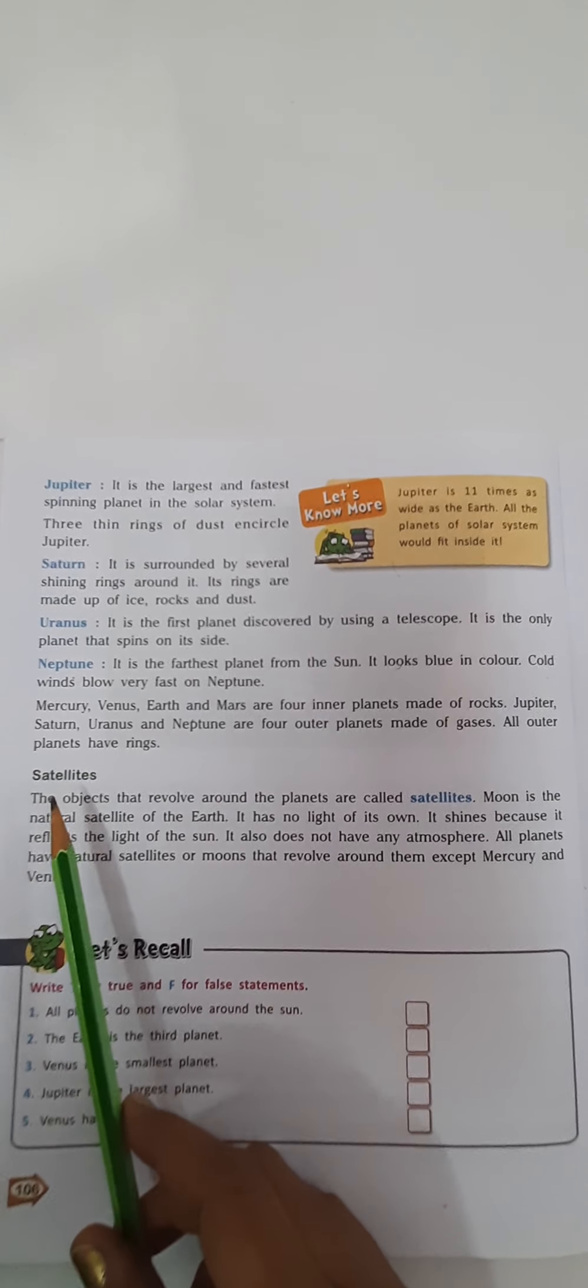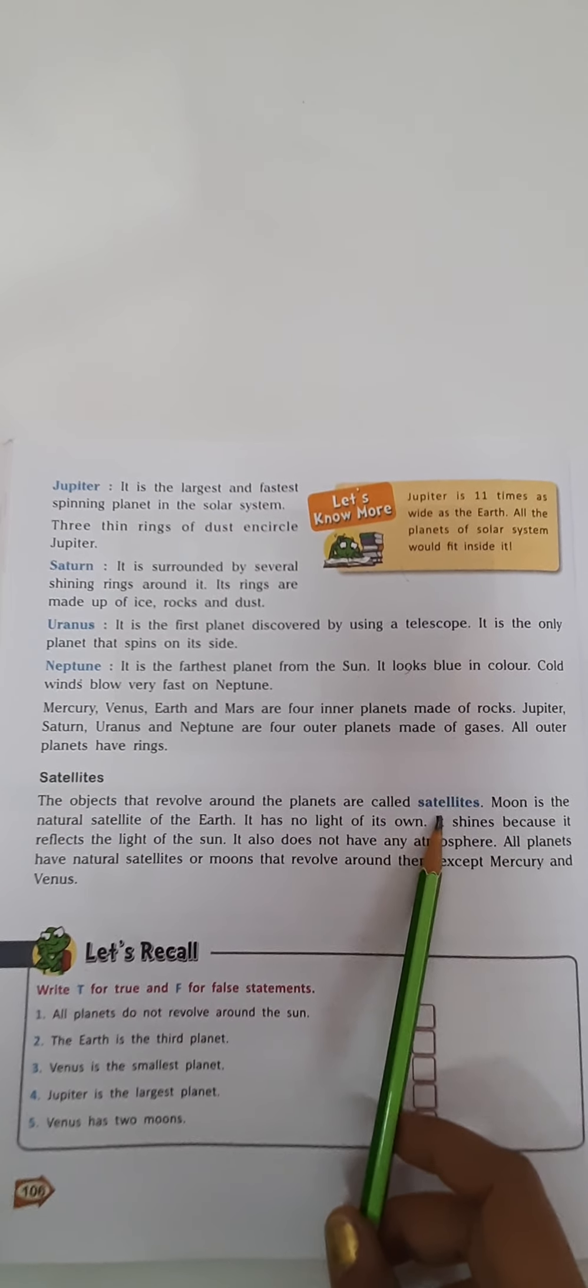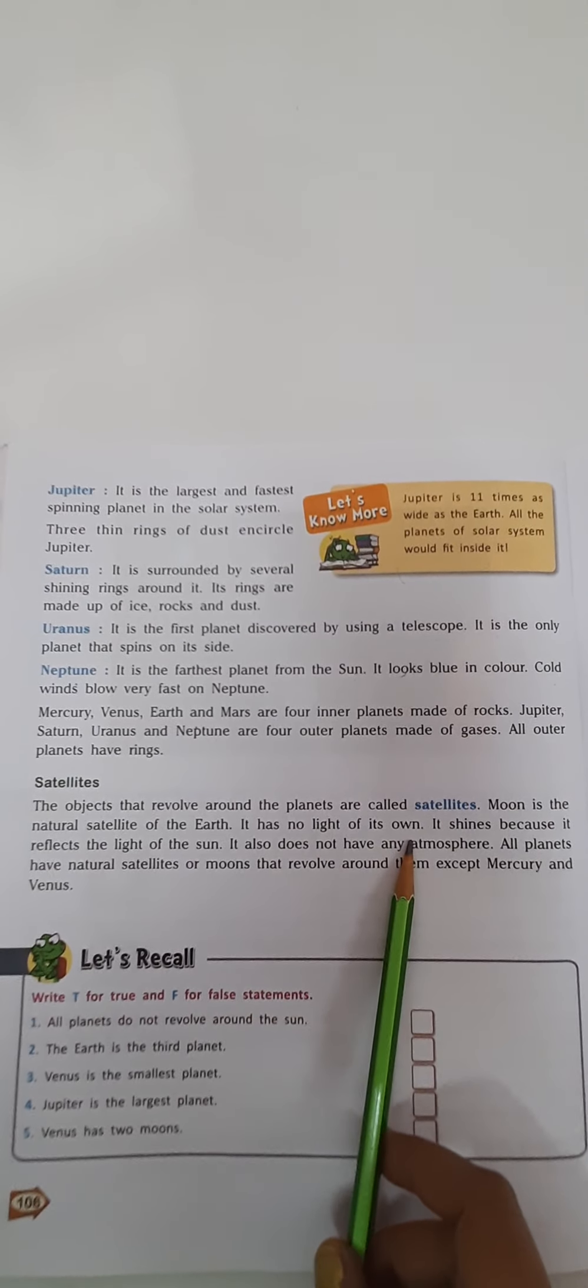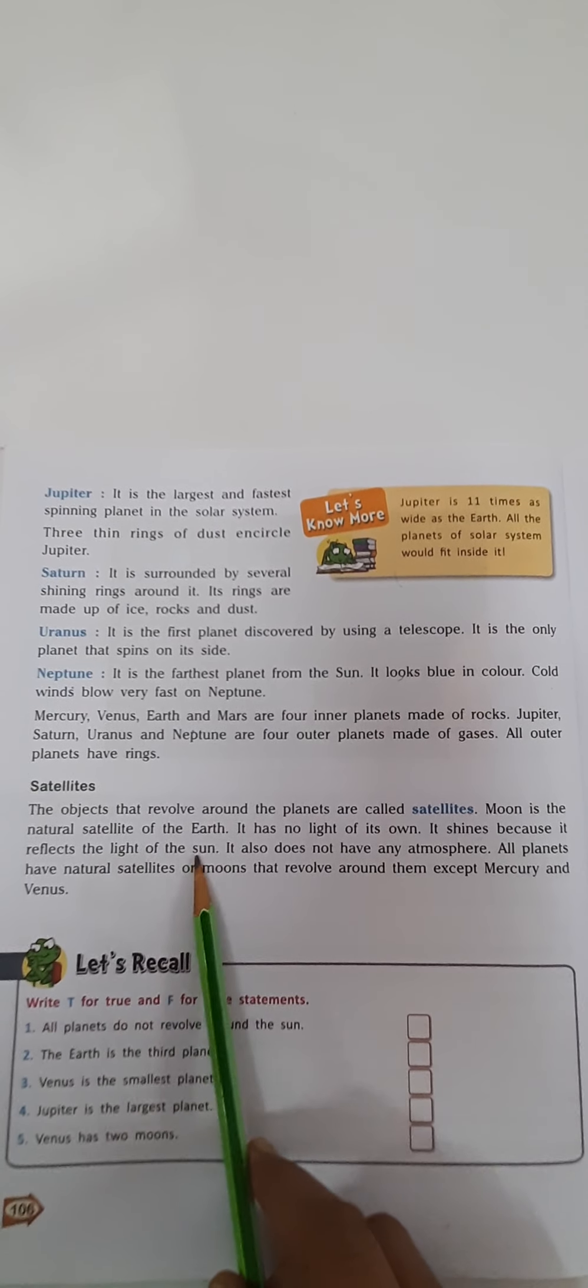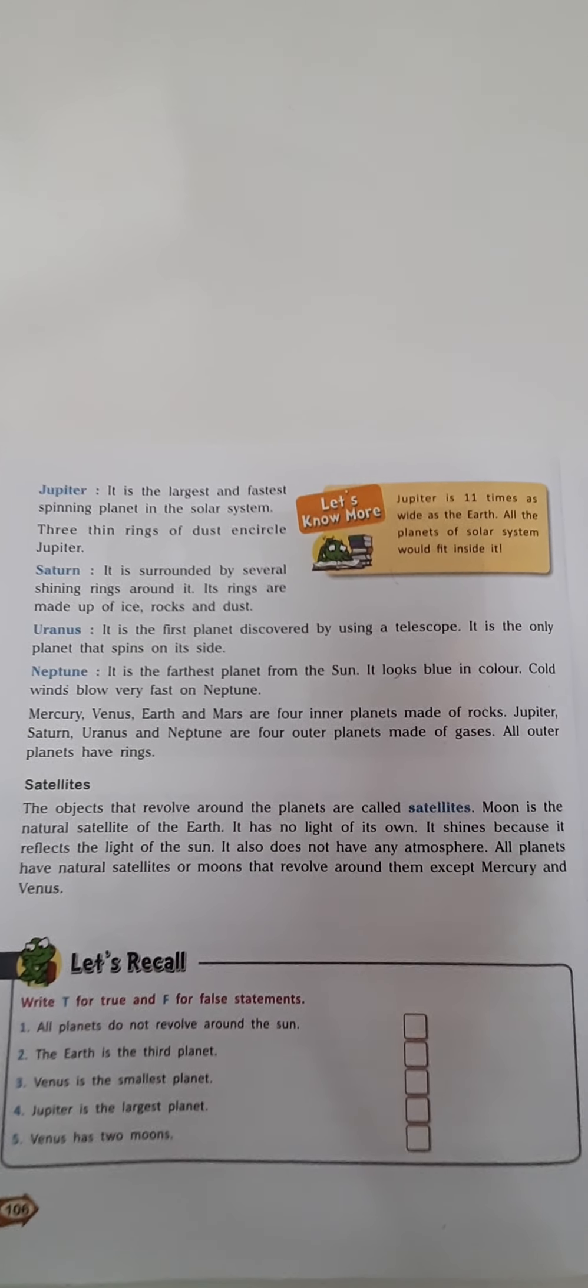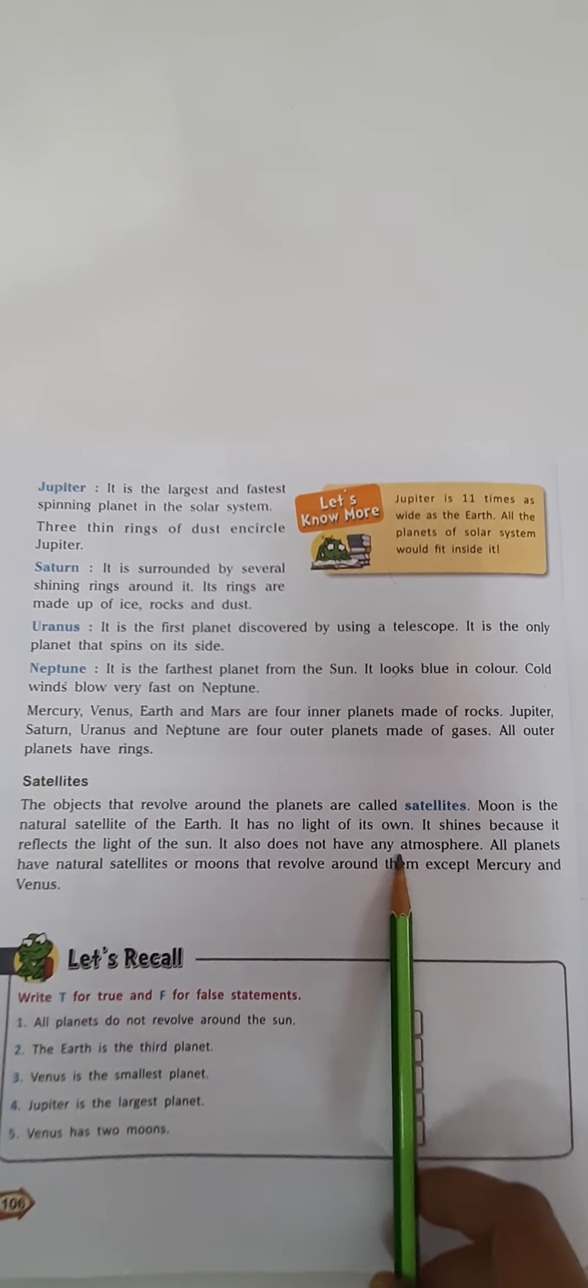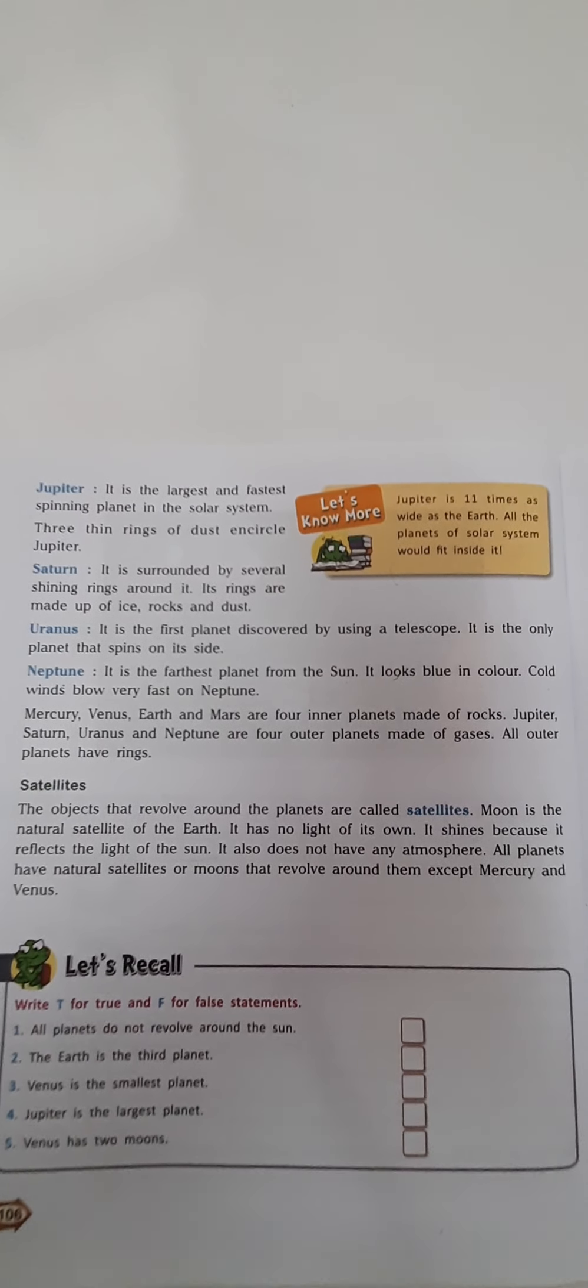Now next are the satellites. The objects that revolve around the planets are called satellites. Moon is the natural satellite of Earth. It has no light of its own and it shines because it reflects the light of the Sun. When the light of the Sun comes on the Moon, the Moon reflects that light, and that is why we are able to see the Moon. It also does not have any atmosphere like Earth. It does not have any air present on it.